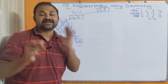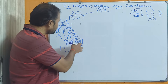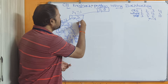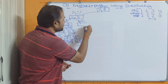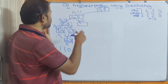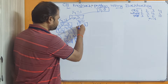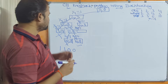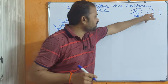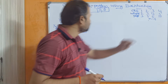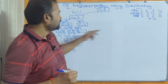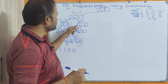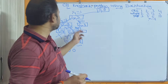We backtrack further to x2=0, meaning we don't consider the second object, so we get the previous value (2,3). At the next level, x3=1 means we consider the third object: weight 2+4=6, profit 3+6=9, giving node (6,9).